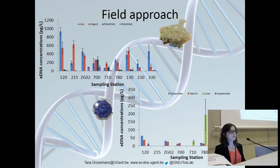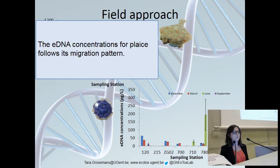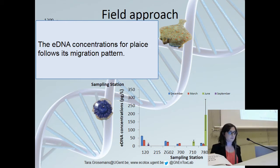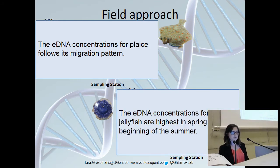For the field approach, we looked at plaice for two summer months and two winter months, showing that during the summer months the eDNA concentration was higher than in the winter months. This follows the migration pattern of plaice. We also looked at the blue jellyfish for four seasonal months at the same sampling stations, which shows that the eDNA concentrations were highest in spring and the beginning of summer.